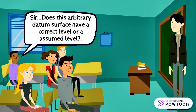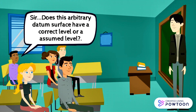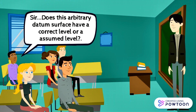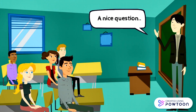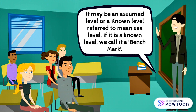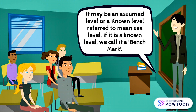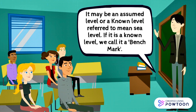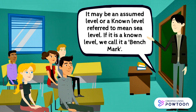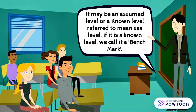Does this arbitrary datum surface have a correct level or an assumed level? It may be an assumed level or a known level referred to mean sea level. If it is a known level, we call it a benchmark.